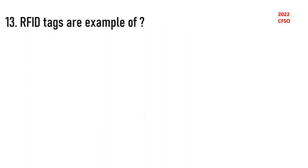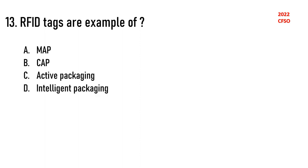Next question: RFID tags are an example of dash. This question was asked in the 2022 CFSO paper. Options are MAP (modified atmospheric packaging), CAP (controlled atmospheric packaging), active packaging, or intelligent packaging. The correct answer is intelligent packaging.